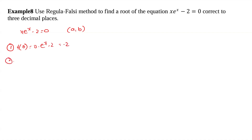Now we need to substitute f(1). f(1) is equal to 1 into e power 1 minus 2, which is equal to 0.7183. These two are adjacent positive and negative values.